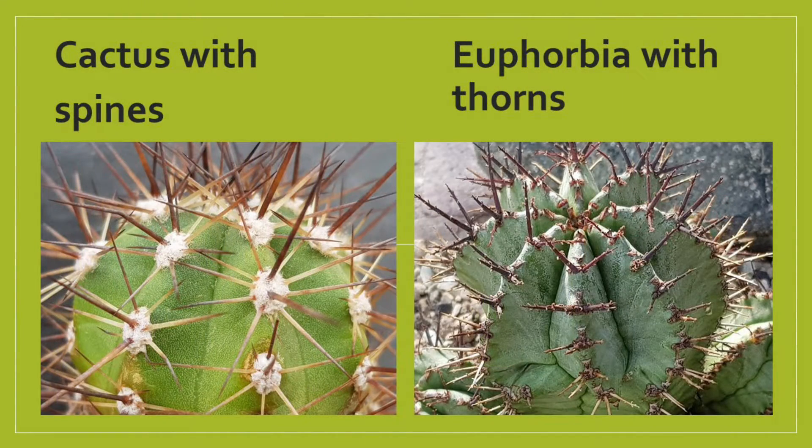Another difference is that cacti actually have spines, and euphorbias have thorns. Botanically speaking, there is a big difference. Spines, which is what cacti have, are actually modified sharp-pointed leaves. Thorns, on the other hand, are modified sharp-pointed stems. You might say that all sounds very theoretical — how can I actually distinguish in my day-to-day gardening between the cactus and its spines and the euphorbia with its thorns?